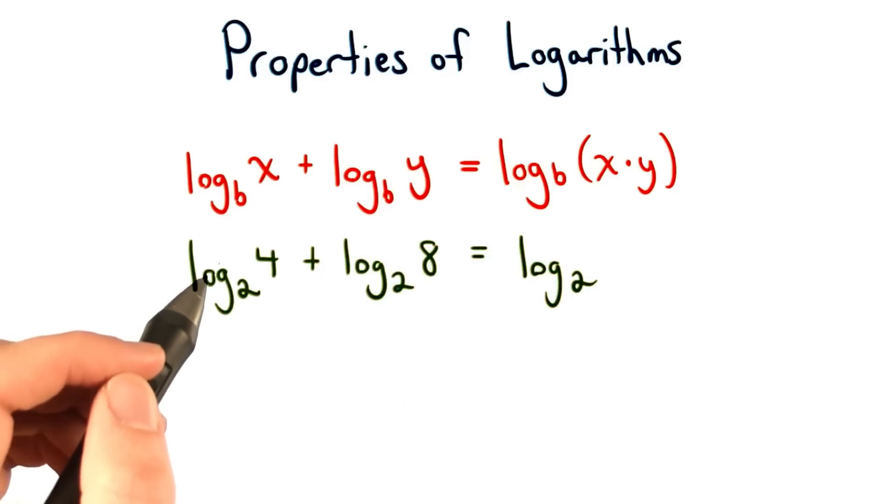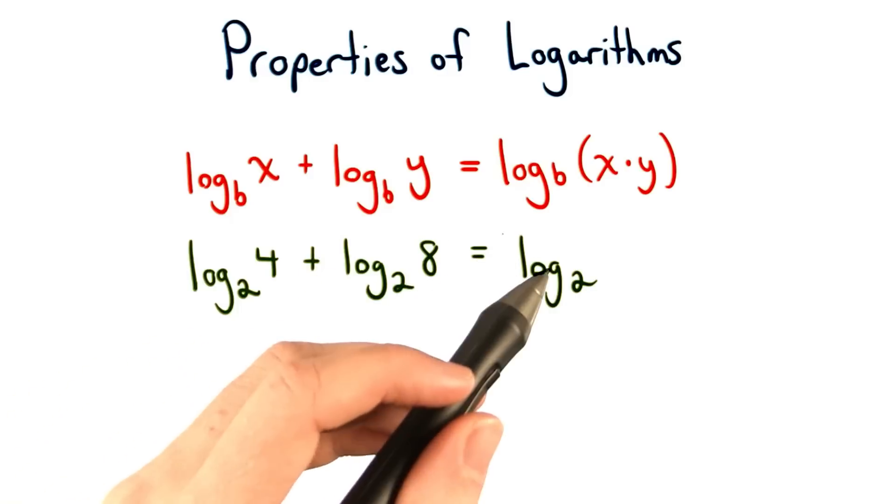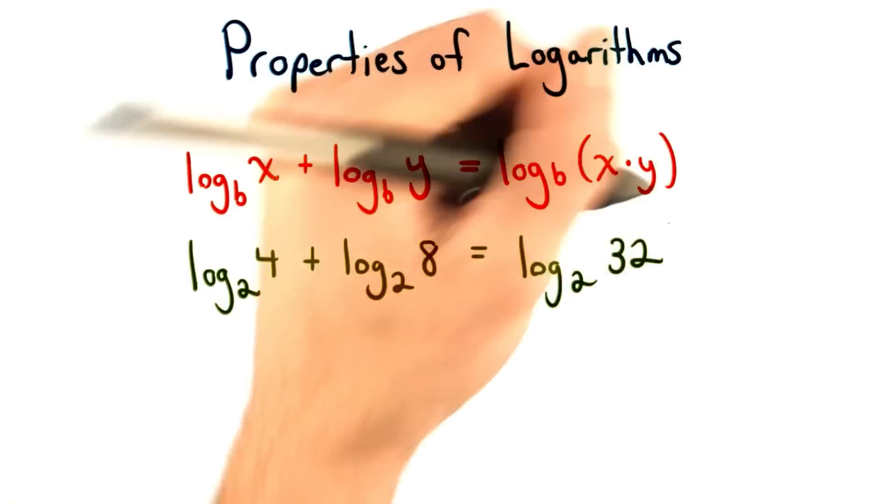For example, if we have log base 2 of 4 plus log base 2 of 8, then we know that equals log base 2 of 4 times 8, which equals 32.